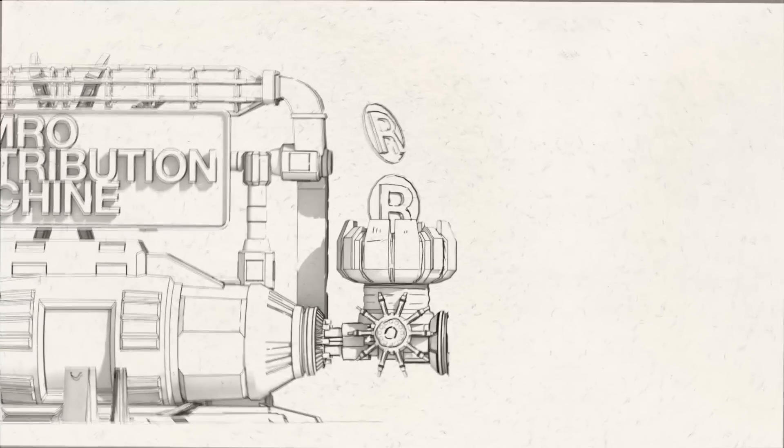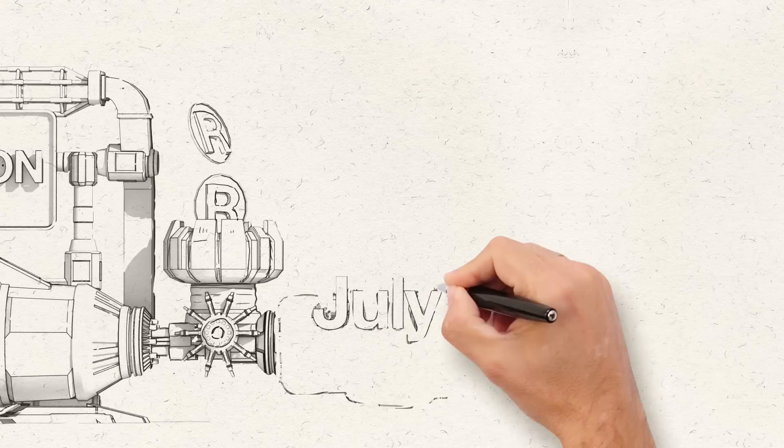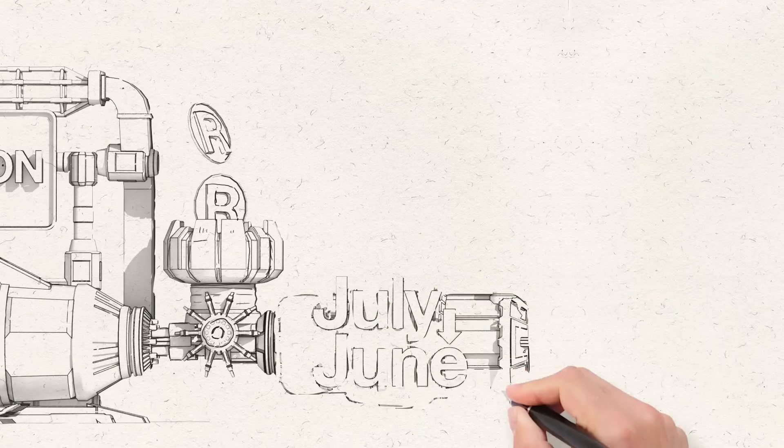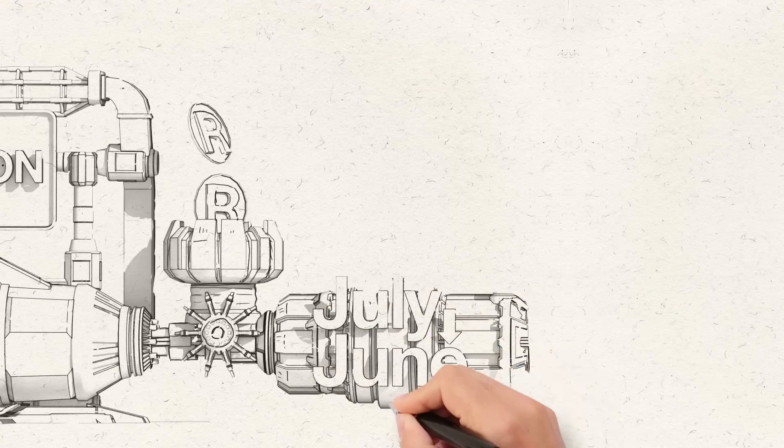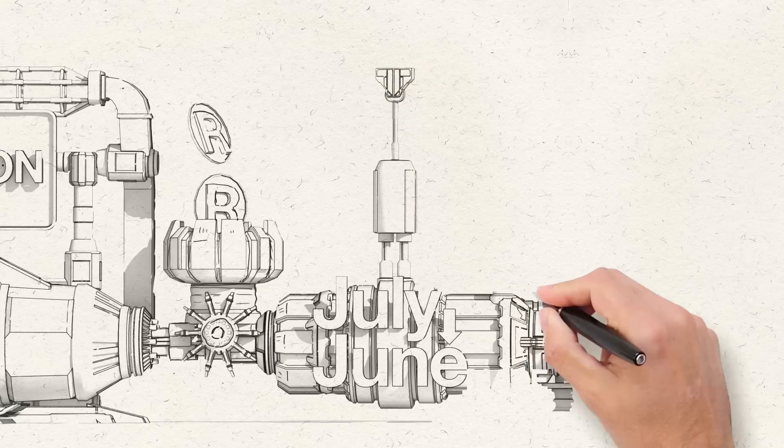So far, not too complicated. Now, here's where it gets tricky. You see, the SAMRO machine works according to SAMRO's financial year, which is from July of the current year to June of the following year.